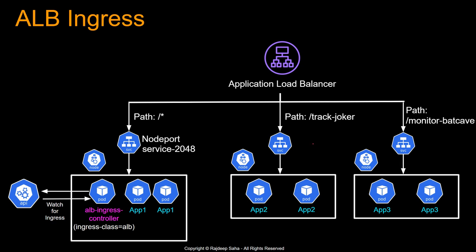So you just define two more ingress resources for two different paths, and that's how you create separate subdomains for the same DNS name of this application load balancer. Depending on the URL path, it diverts traffic to different applications underneath. Since we're using Amazon Application Load Balancer — a layer 7 load balancer — it supports path-based routing, SSL termination, HTTPS traffic, WebSockets, HTTP/2, AWS WAF integration, access logs, health checks, and more.